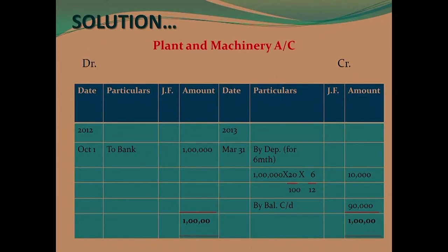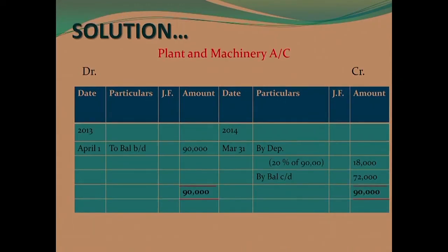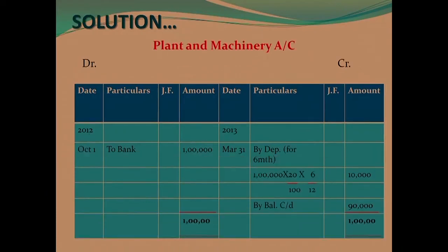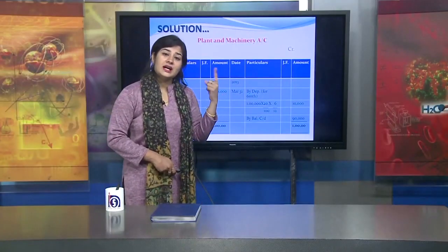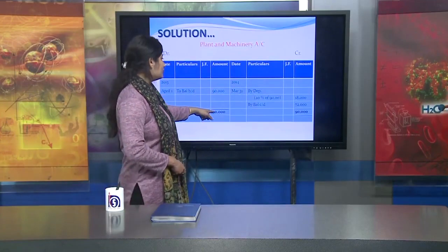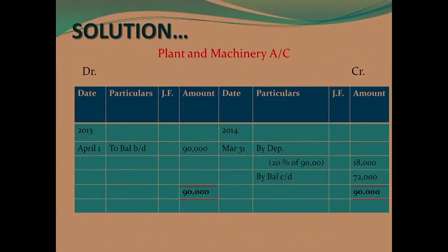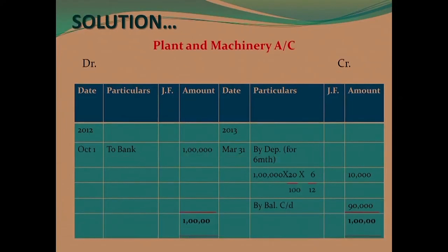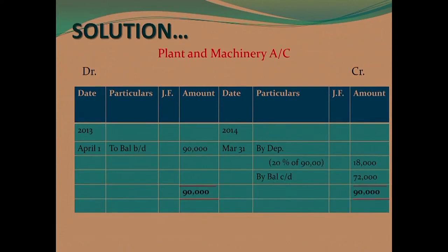For the year 2013-14, the balance of 90,000 is brought forward to the debit side. Now depreciation is charged on the diminishing balance — unlike SLM where we charged on the original cost, here we charge on 90,000. So depreciation is 20 percent of 90,000, which is 18,000. The closing balance is 90,000 minus 18,000 = 72,000. This balance of 72,000 carries forward to 2014-15.